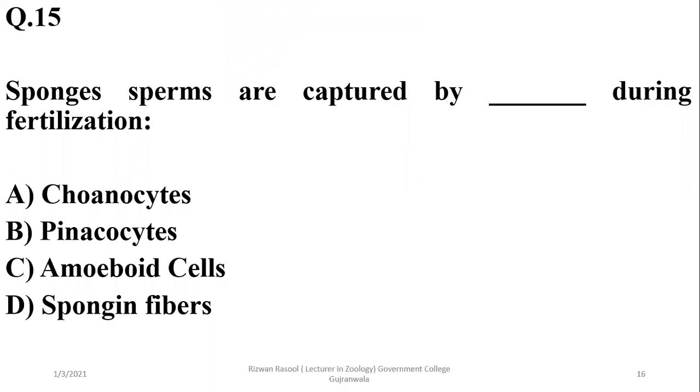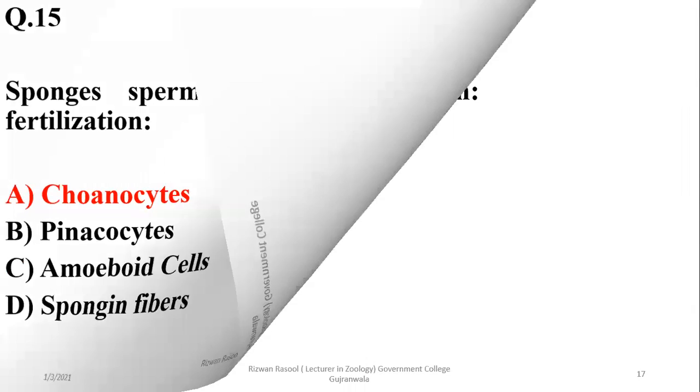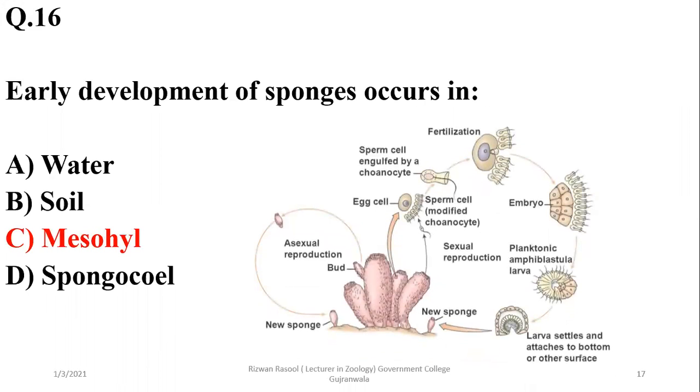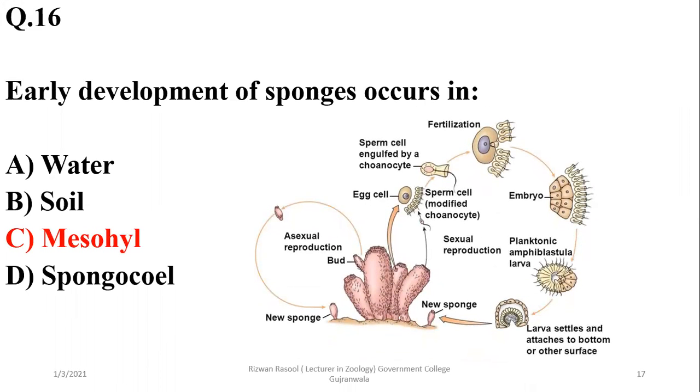Sponge sperms are captured by choanocytes during fertilization, so alpha is the right option. Early development of sponges occurs in the mesohyl of the body cavity. Later they settle into a larval form which attaches to the bottom or other surfaces, but early developmental stages are completed in the mesohyl.